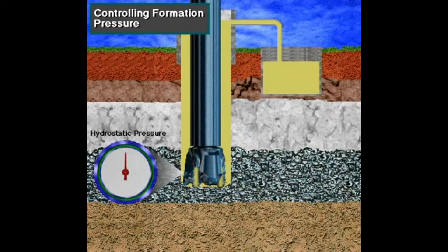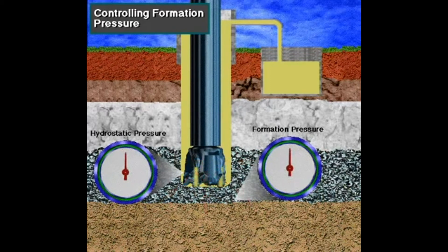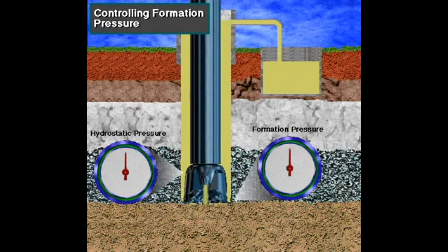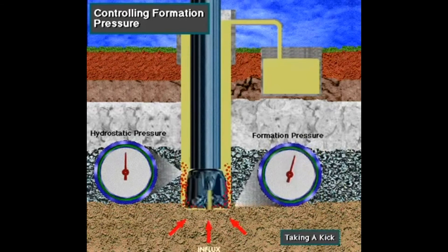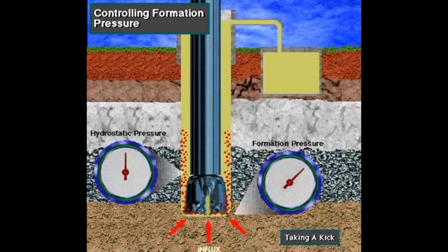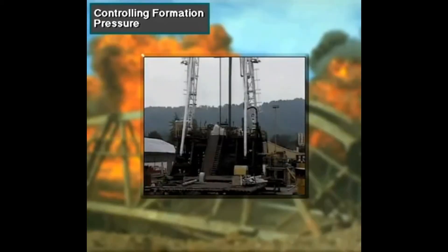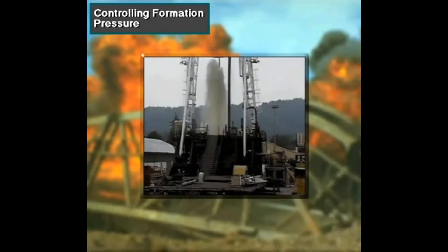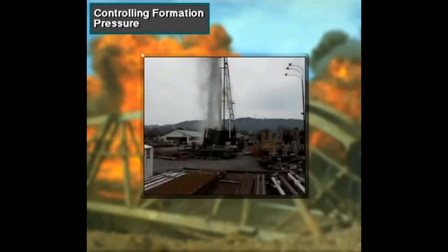The column of mud in the well creates downhole pressure called hydrostatic pressure. The hydrostatic pressure of the mud column offsets formation pressure. Mud is the first line of defense in well control. As long as the hole is full of mud that is the right weight, the well cannot kick and perhaps blow out. A kick is the entry of formation fluids into the wellbore, which forces drilling mud out of the hole. If crew members fail to control a kick, a blowout can occur — the uncontrolled flow of drilling mud and formation fluids out of the hole.